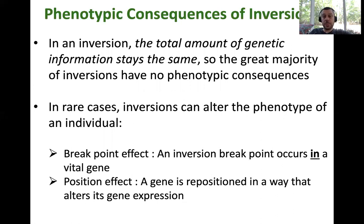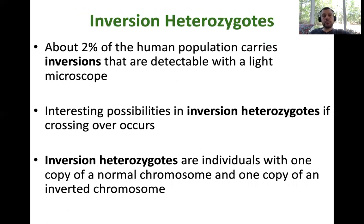Generally speaking, because inversions don't add or detract genetic information, there's normally no phenotype. About 2% of the human population — so probably about one person in our class — has some kind of large inversion that you could physically see with a light microscope.